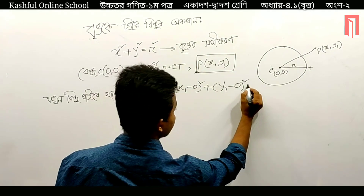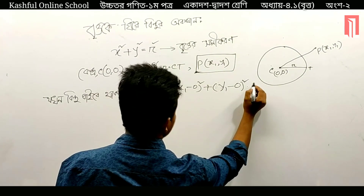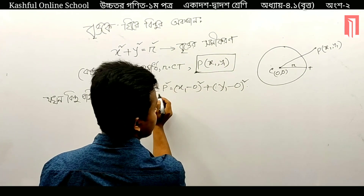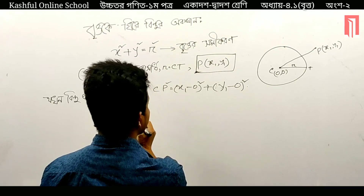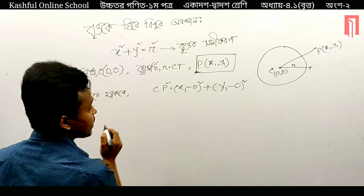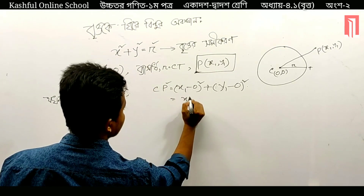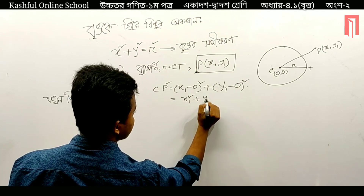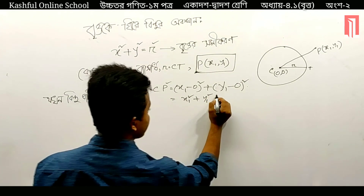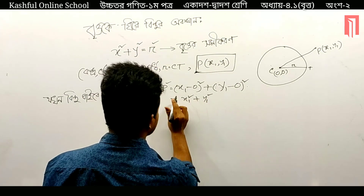We have three points. It is C, P. So let me write x1 squared plus y1 squared.